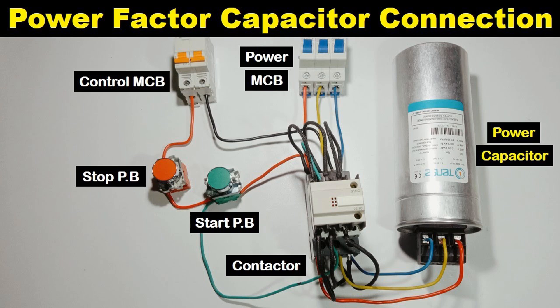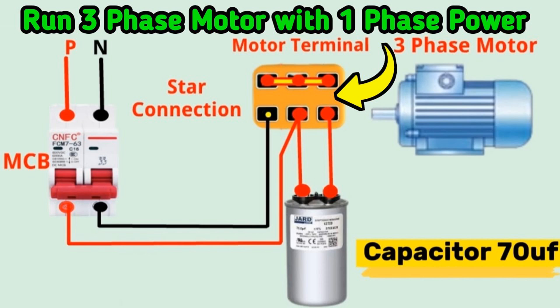Surge capacitors, also known as surge arrestor capacitors or surge suppression capacitors, are used in electrical systems to protect sensitive equipment from voltage surges, transients, and spikes. Surge capacitors are designed to absorb and dissipate excess energy from voltage surges and spikes in the electrical system, thereby protecting equipment from damage caused by over-voltage conditions.